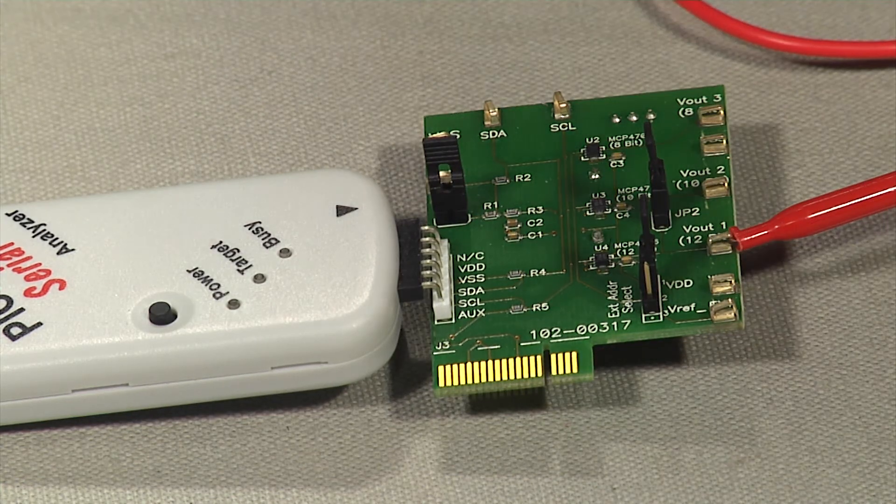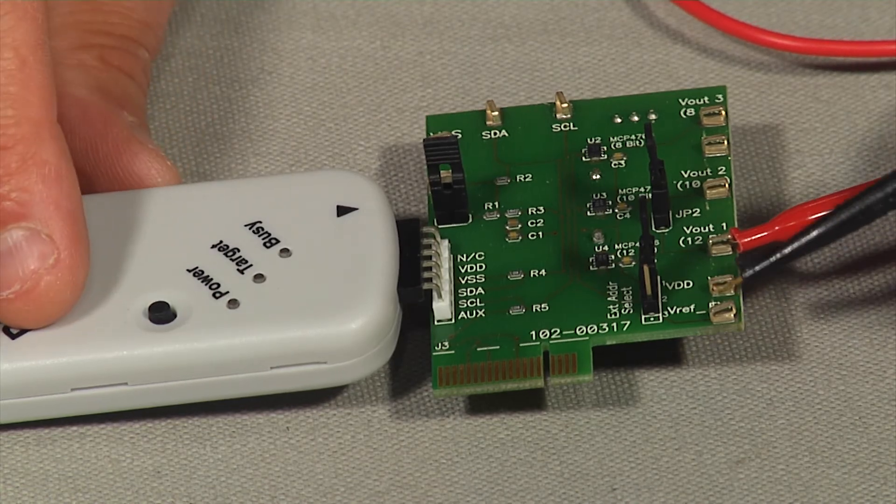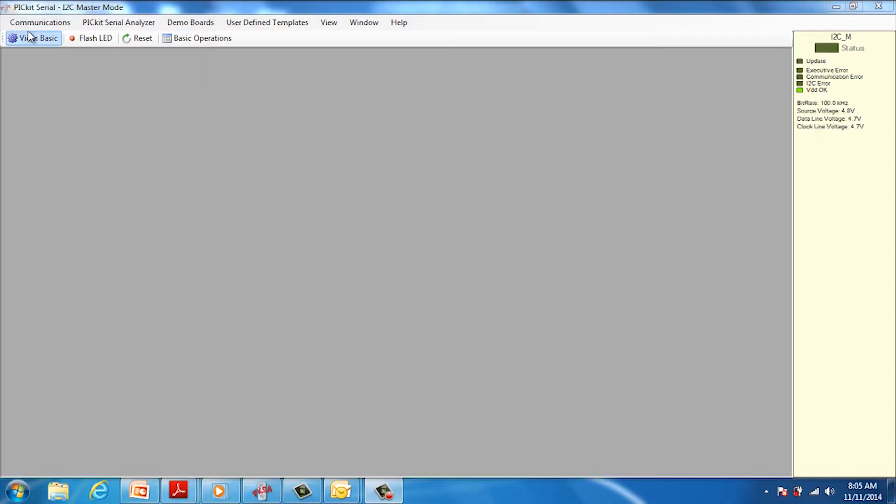Connect the digital voltmeter to VOUT Test Terminal, VOUT1, and VSS. Click in the Communications tab, then select Script Builder. This will open the Script Builder window.